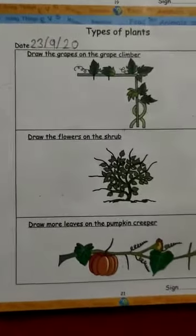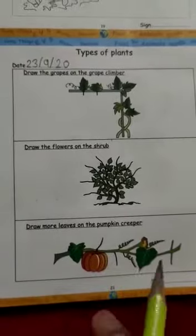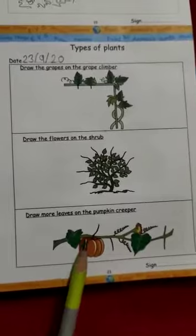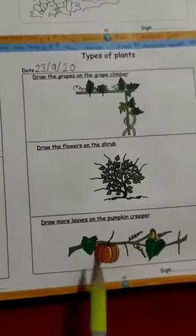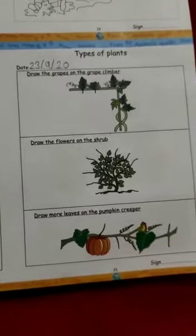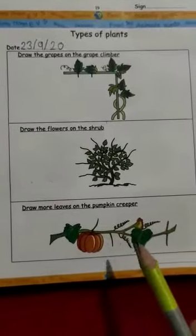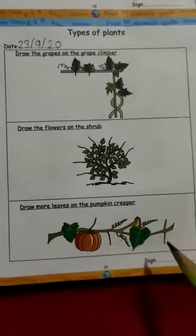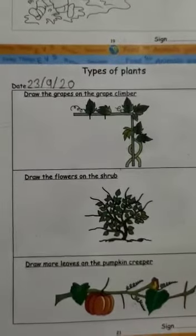The third type of plant is a creeper. Creepers grow along the ground — they cannot stand straight because they have very weak stems. Examples are pumpkin, watermelon, and cucumber. Your homework is to draw more leaves on the pumpkin creeper and draw flowers on it.